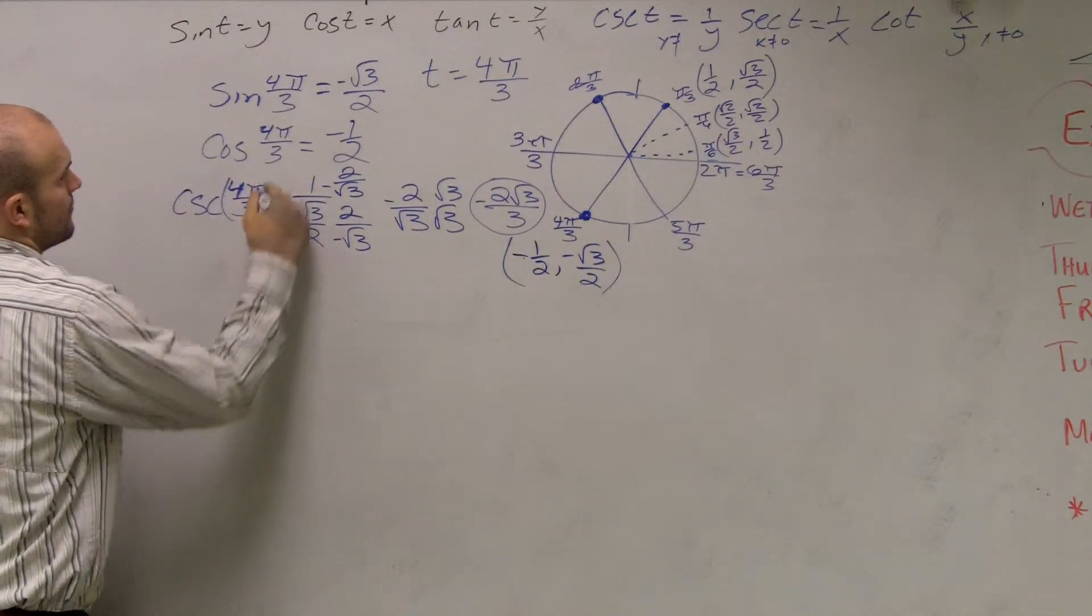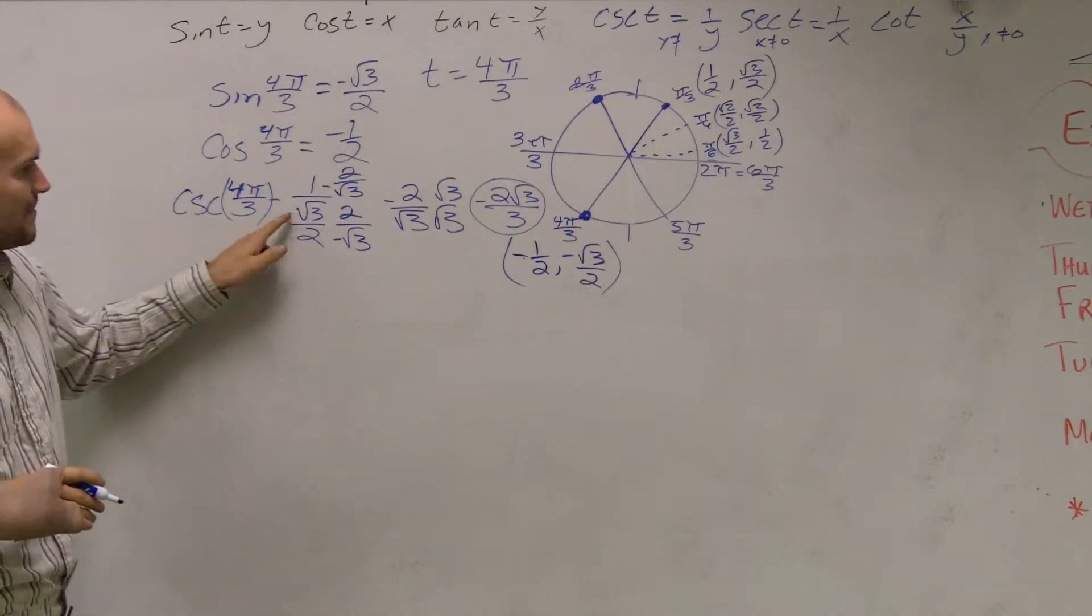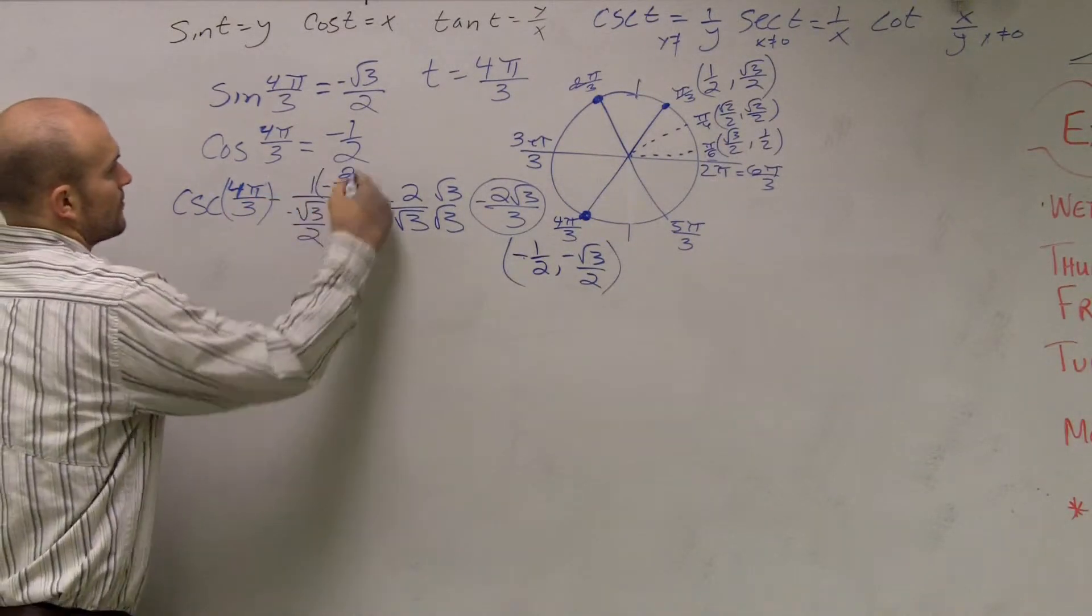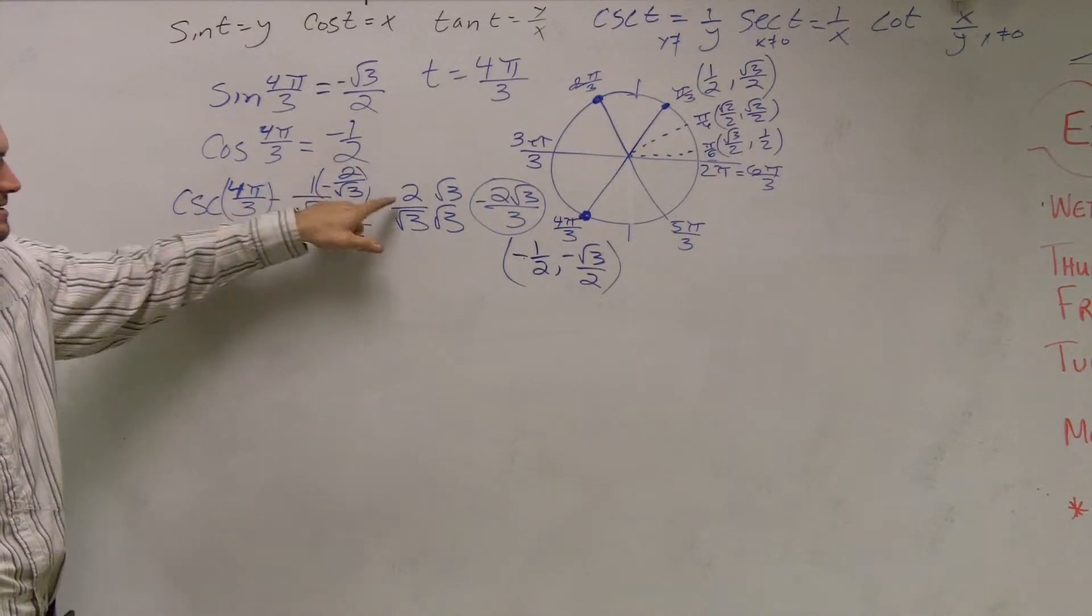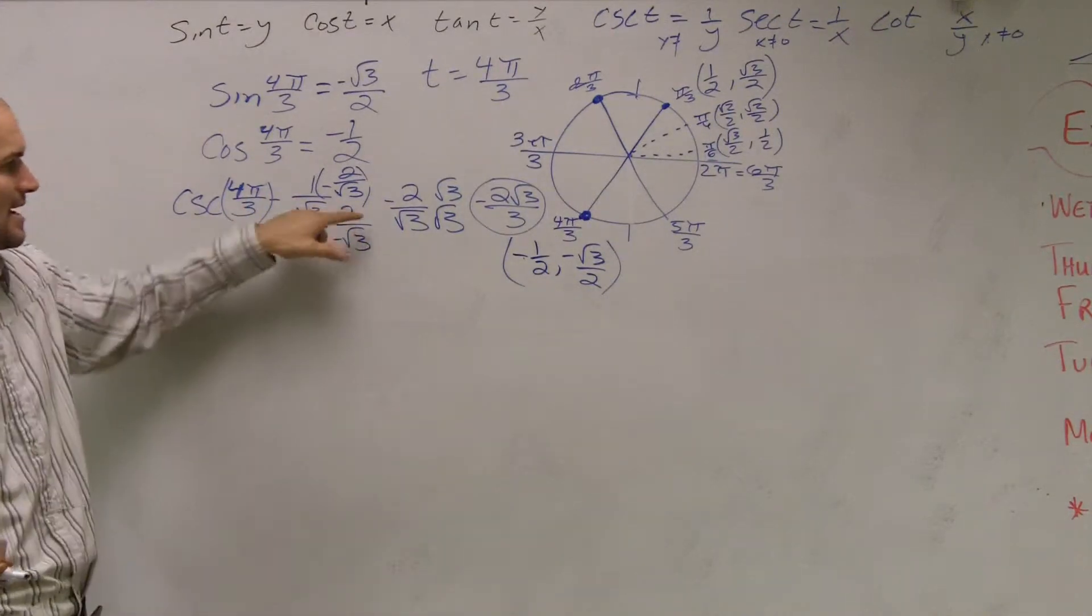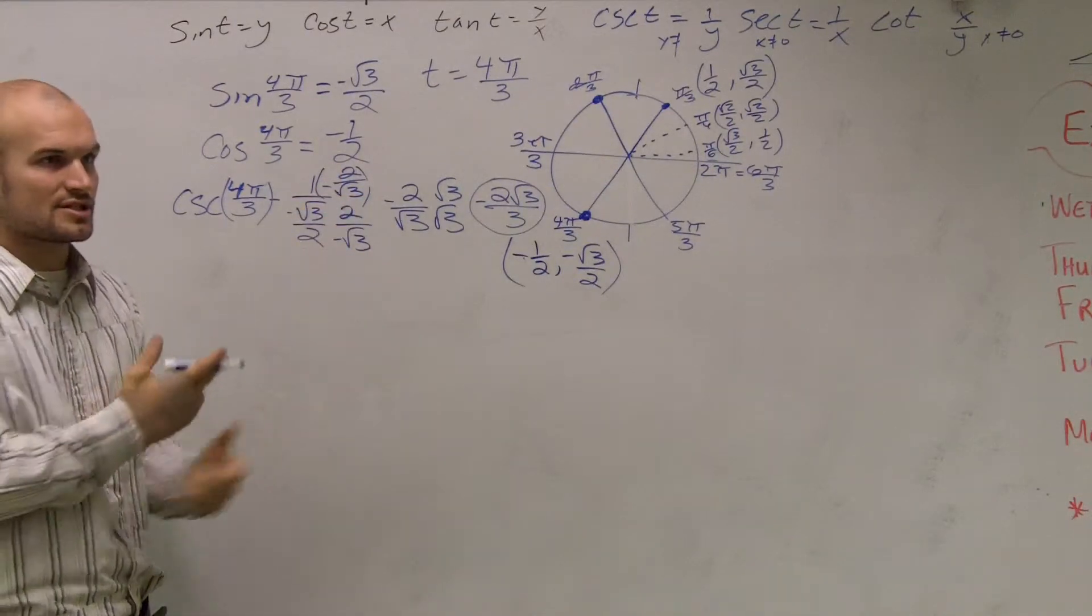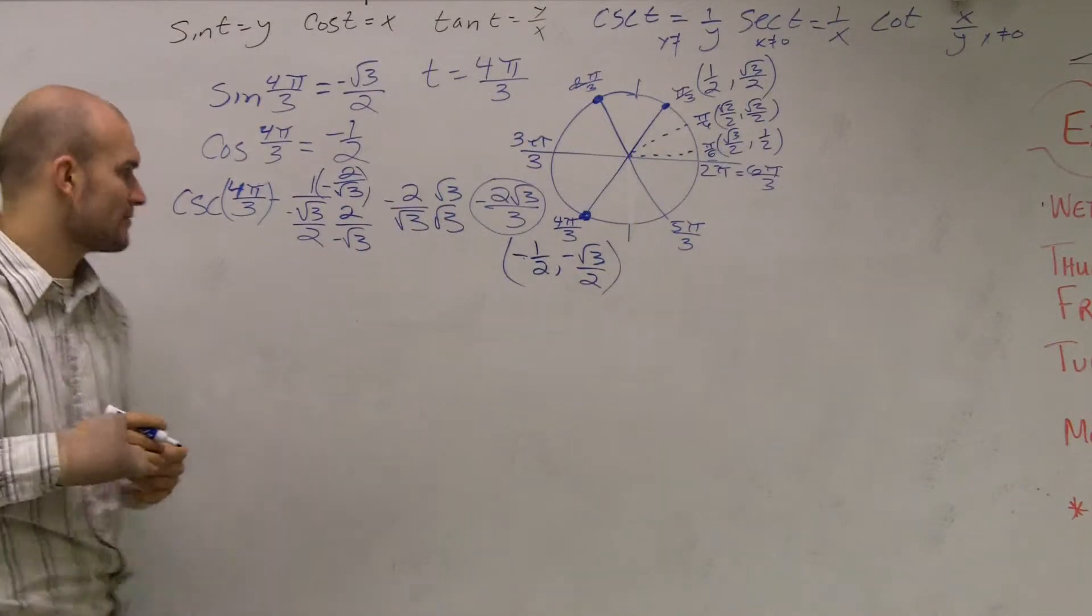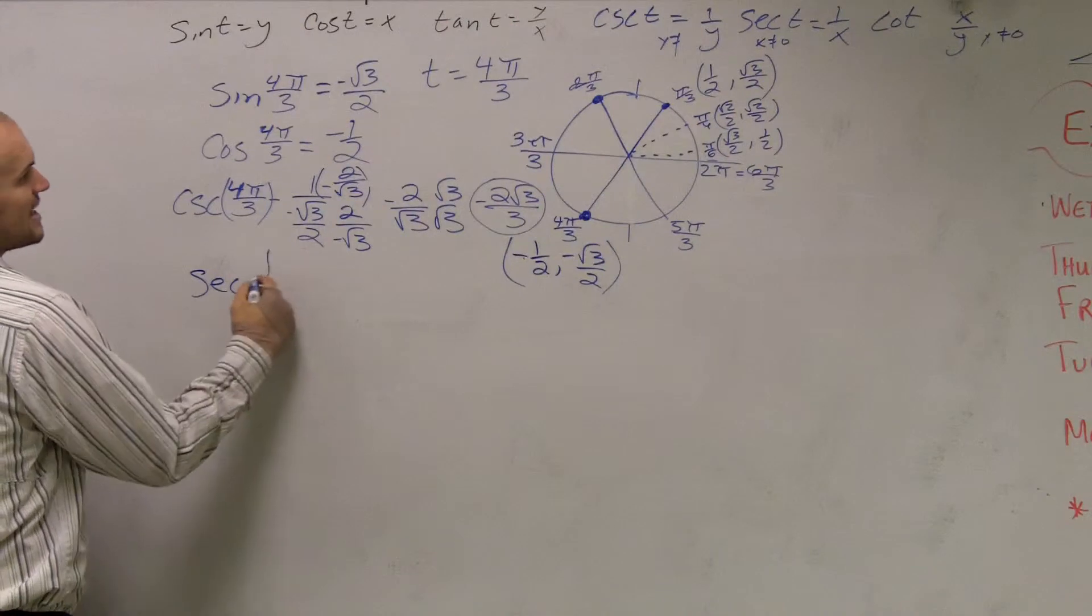Wouldn't it still be a negative radical 3? Well, what happens is this ended up being a positive 1. And then it's 1 times a negative radical 3. So that's negative radical 3, but this becomes a positive. What I did, yes, I see what you're saying. I kind of changed where the negative sign was. But it doesn't matter if the negative sign is on top or bottom. It's still just the whole fraction is going to be negative. So it just becomes a negative 2 radical 3 over 3.